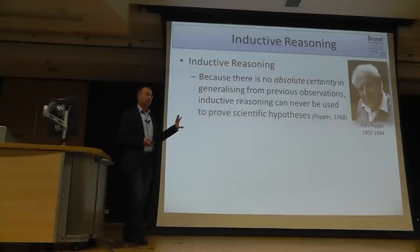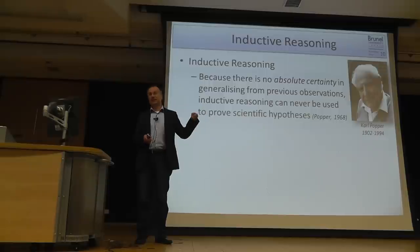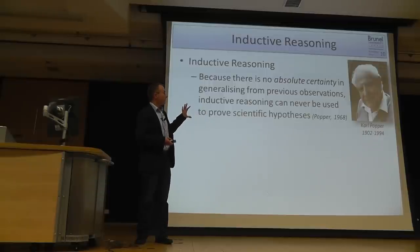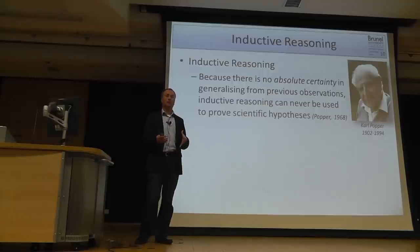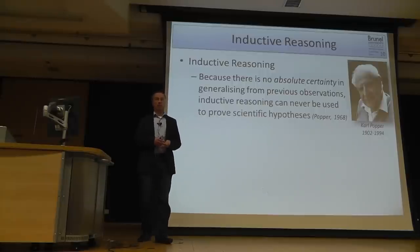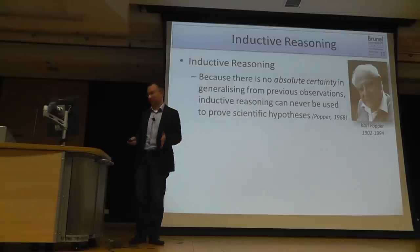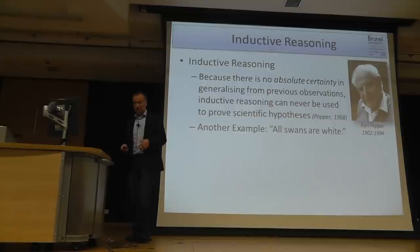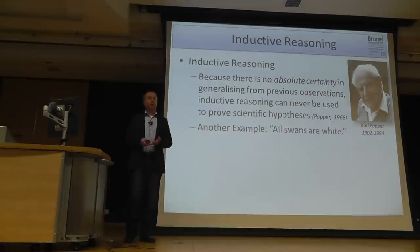Instead, Popper proposed a process called falsification. He said that in an extreme point of view, you can never prove a hypothesis — you can only falsify it by providing one example which disproves it. To prove something, you would always need to investigate all examples. An example often used in this context is the hypothesis: 'All swans are white.'